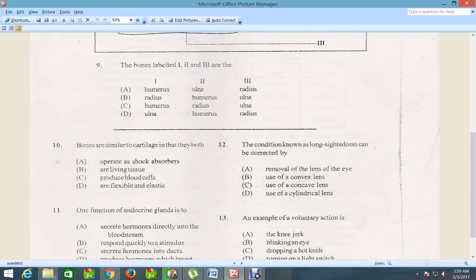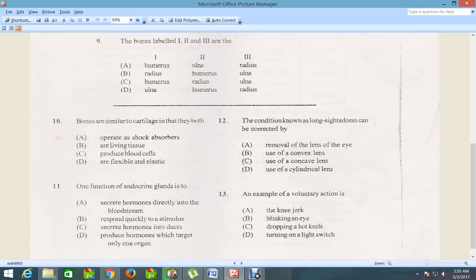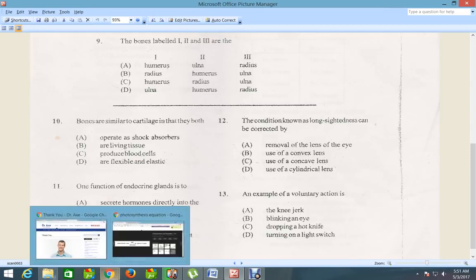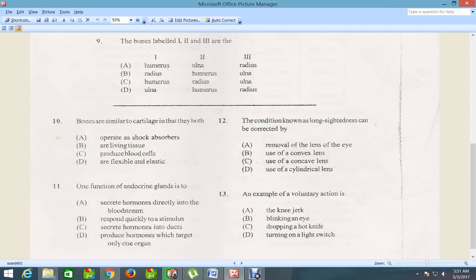Question number 11, one function of endocrine glands is to secrete hormones directly into the bloodstream, respond quickly to a stimulus, secrete hormones in ducts, and the next one is saying produce hormones which target only one organ. So the correct answer of course is A, which is secrete hormones directly into the bloodstream.